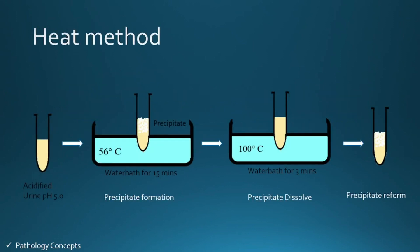In the heat method, the urine is acidified by adding 1 ml of acetate buffer to 4 ml of filtered urine to reach pH 5.0. This test tube is then placed in a water bath for 15 minutes at 56 degrees centigrade. At this temperature, a precipitate forms due to the protein.